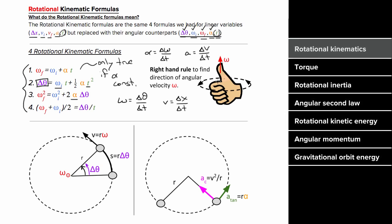For something rotating in a circle, technically the angular velocity points perpendicular to the plane of rotation, but it's easiest to just think of omega as being counterclockwise or clockwise.